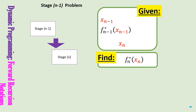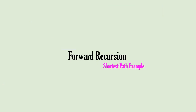Therefore, the goal of forward recursion is to solve stage 1 problem, followed by stage 2 problem, all the way to stage n−1 problem. Stage n−1 problem is defined as: given x_{n-1}, x_n, and the information about f*_{n-1}, find f*_n. Finding f*_n is nothing but finding the optimal objective function value of the entire problem. Now let us practice these notations with an instance of the shortest path problem.